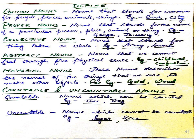Material noun describes the names of things that we use to make other objects — for example, gold, wood, silver and similar materials. Then countable nouns are those which can be counted, and uncountable nouns, like sugar and rice, are those which we cannot count.